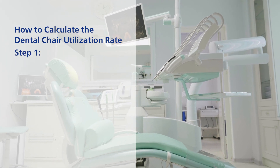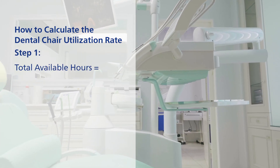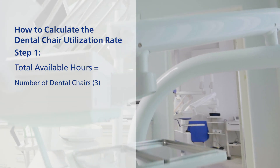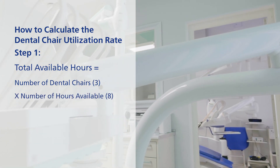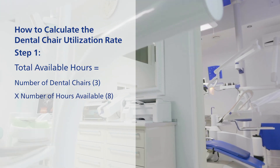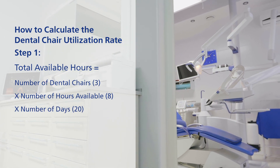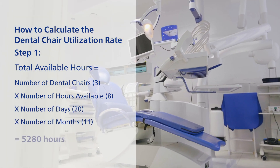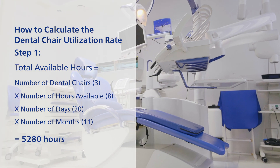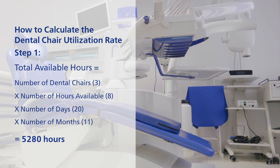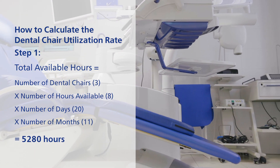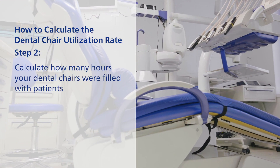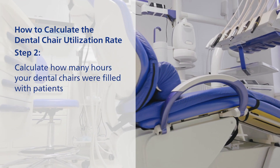Begin by totaling all the available hours. This number relates to clinic working hours. To increase a clinic's capacity, you can increase working hours and add available dental chairs. Let's assume you have a small three dental chair clinic and you work Monday through Thursday from 8 a.m. to 5 p.m., 20 days in a given month, 11 months in a calendar year. Step 2: calculate how many hours your dental chairs were filled with patients.